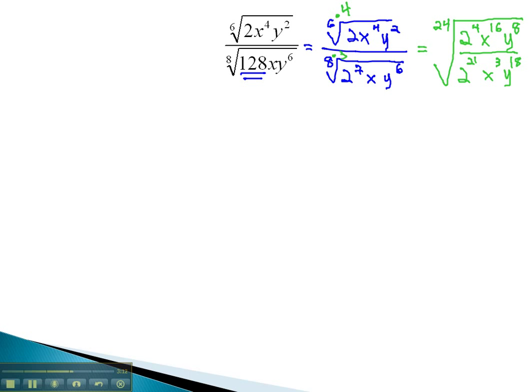Now, we can combine our factors together by subtracting exponents. Under this 24th root, when we subtract on the 2's, 4 minus 21 is negative 17. This means the 2 to the 17th needs to go in the denominator.